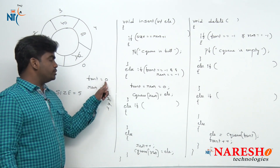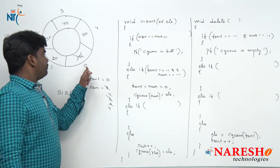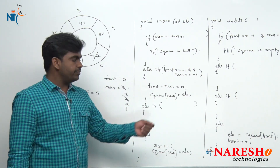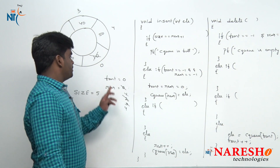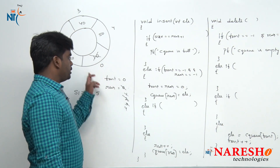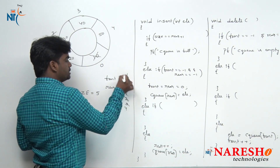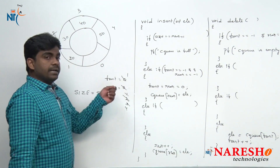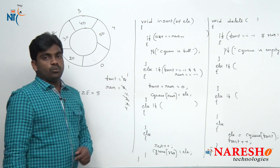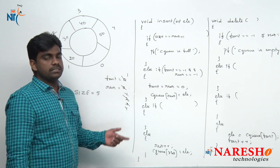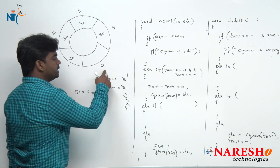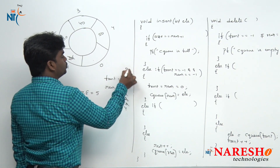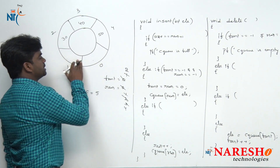Initially front value is 0, cqueue[front] is 10, which is the deleted item. Next we move — front value becomes 1. If we delete one more element, the else block executes again: 20 will be deleted and front becomes 2.